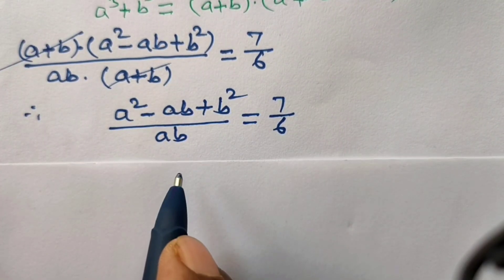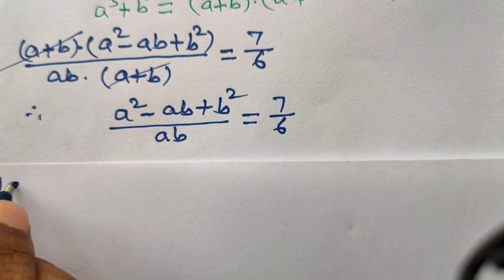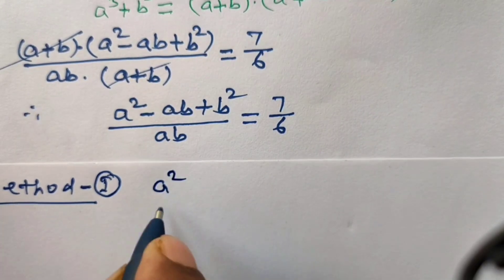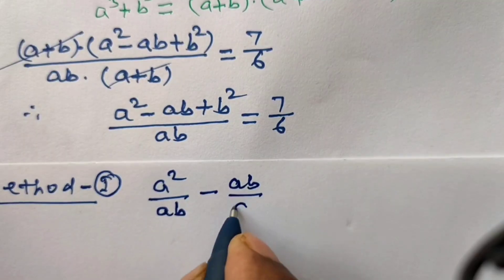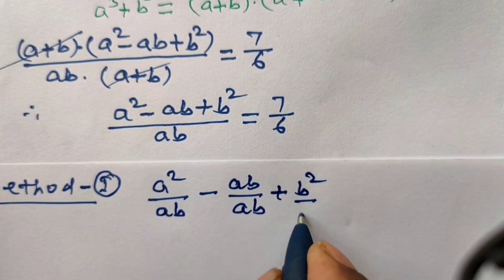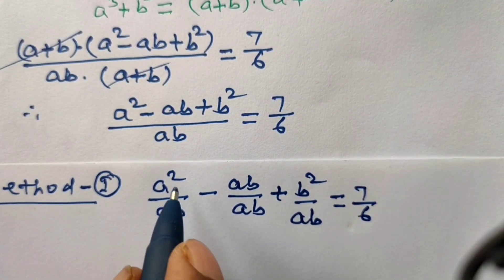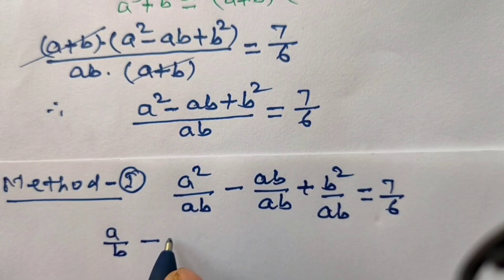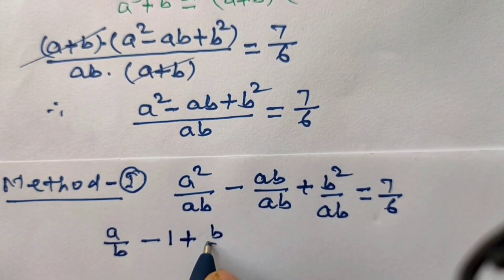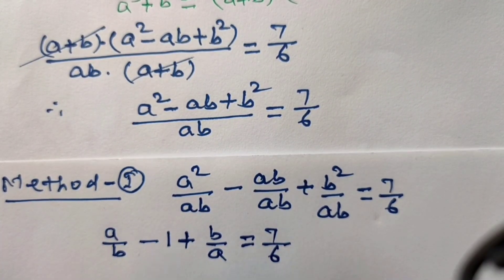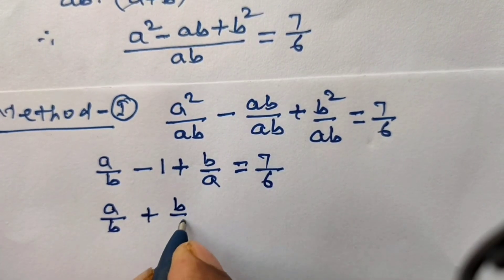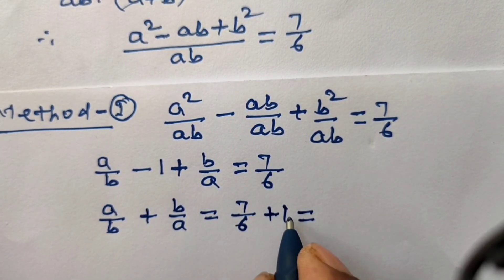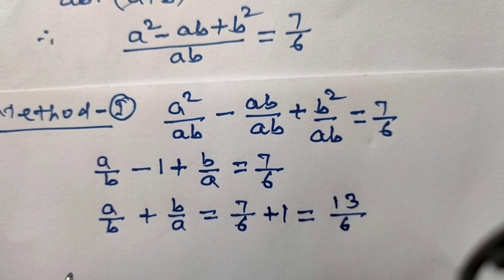From this step we can solve using two methods. Method 1: dividing each term in the numerator by ab gives a squared upon ab minus ab upon ab plus b squared upon ab equals 7 upon 6. Simplifying, this becomes a upon b minus 1 plus b upon a equals 7 upon 6. Taking the minus 1 to the right-hand side, a upon b plus b upon a equals 7 upon 6 plus 1, which is 13 upon 6.